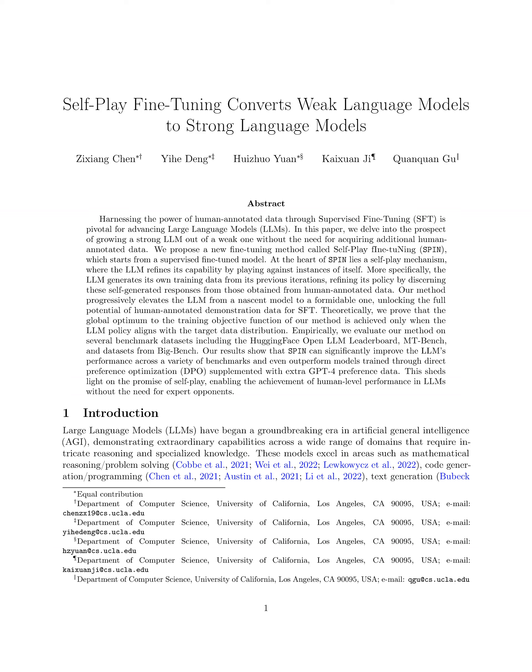In this paper, we introduce a novel method known as self-play fine-tuning, SPIN, to enhance the performance of large language models (LLMs) without the need for additional human or AI feedback.